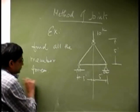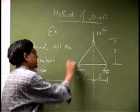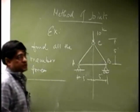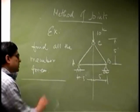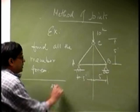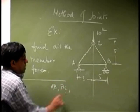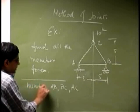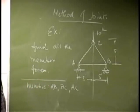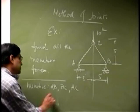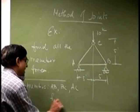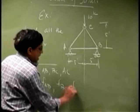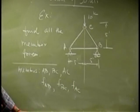Let me label these joints. We'll call this joint A, this one B, and this one C. So there are three members: member AB, member BC, and member AC. This means there are going to be three unknown member forces: FAB, FBC, and FAC.